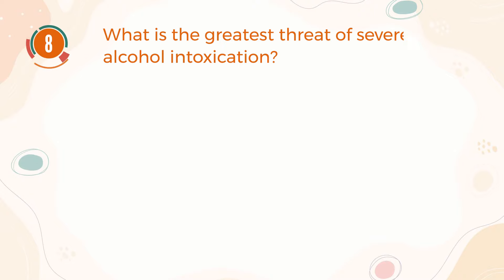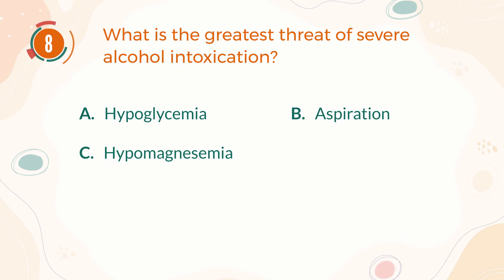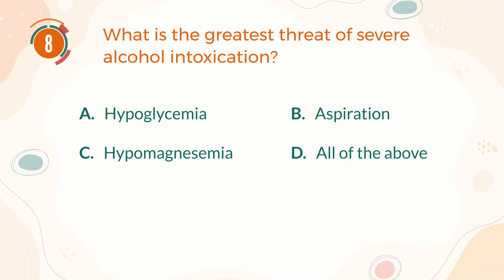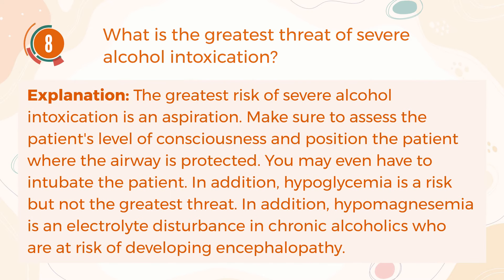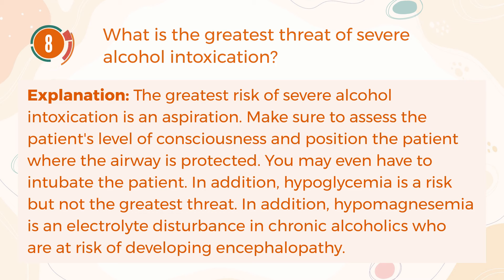Number 8. What is the greatest threat of severe alcohol intoxication? A, hypoglycemia. B, aspiration. C, hypomagnesemia. D, all of the above. The correct answer is B, aspiration. The greatest risk of severe alcohol intoxication is aspiration. Make sure to assess the patient's level of consciousness and position the patient where the airway is protected. You may even have to intubate the patient. In addition, hypoglycemia is a risk but not the greatest threat. Hypomagnesemia is an electrolyte disturbance in chronic alcoholics who are at risk of developing encephalopathy.